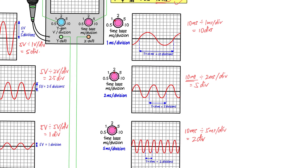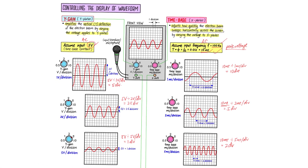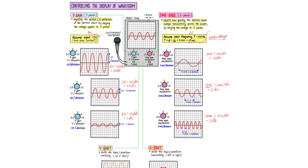That's how the wave looks when you change the time base from 1 millisecond per division to 2 milliseconds per division to 5 milliseconds per division. Depending on how you want the waveform to look, you set the time base accordingly. I hope after this video you have a better understanding of how the CRO works and how to control the waveform using these four controls.